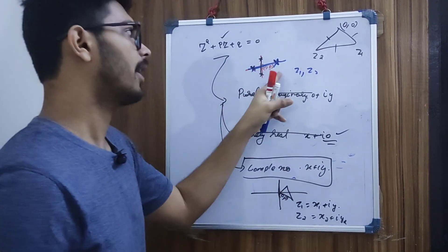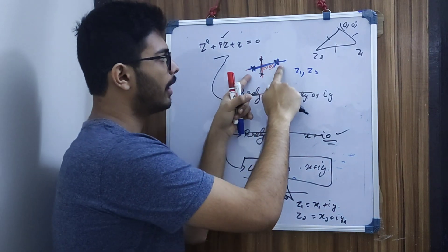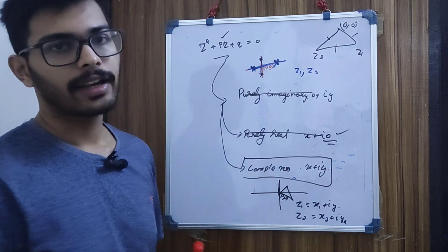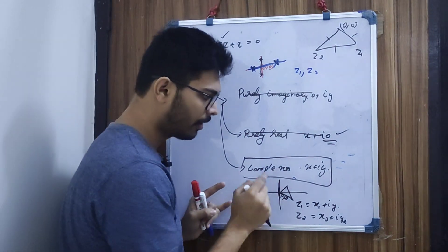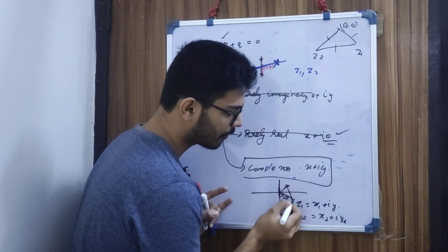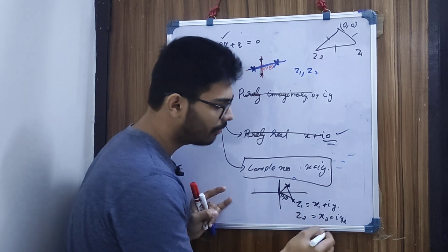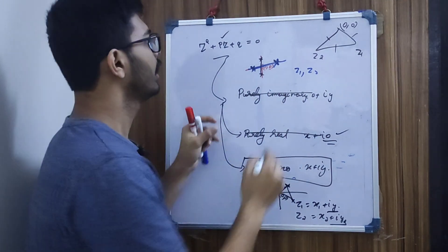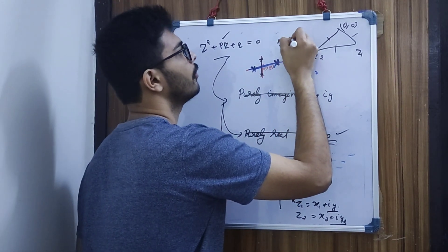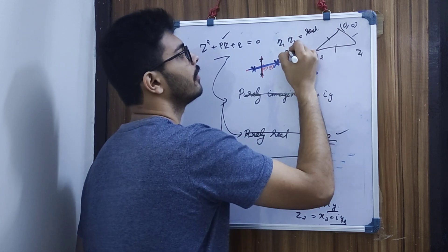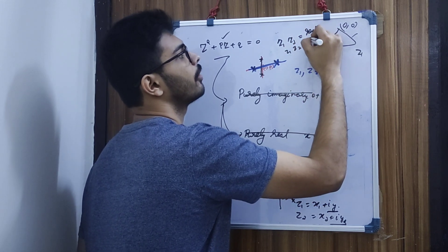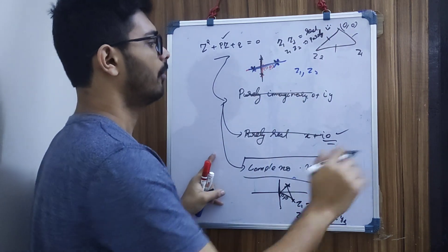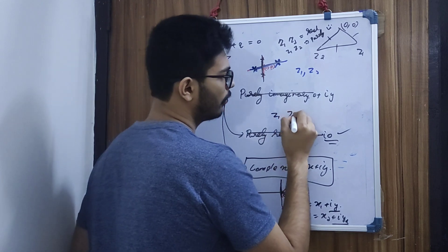We will discuss the discriminant. If the root is purely imaginary and real — if it is purely imaginary it cannot be purely real. It could be purely complex. Z1 and Z2 are purely real and purely imaginary. In this case, we have a triangle. Z1 and Z2 are complex in this case.